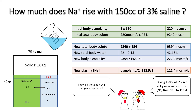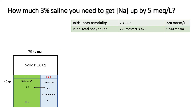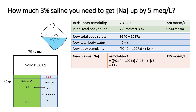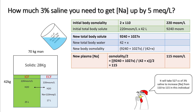So giving that 150 cc bolus of 3% saline is completely safe, especially in severe hyponatremia. Now, to raise sodium by 5 points, let's calculate how much total 3% is needed. Assuming X liters of 3% saline: new body solute = 9240 + (1027 × X), and new total body water = 42 + X. Dividing solute by water gives new osmolality, and we want sodium of 115. Solving for X gives around 527 cc's — so it takes roughly half a liter of 3% saline to raise sodium from 110 to 115.